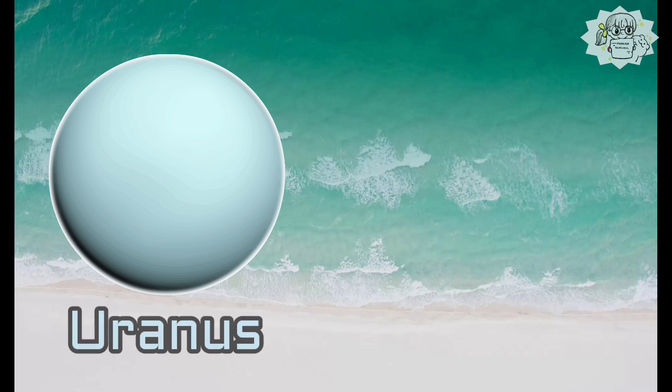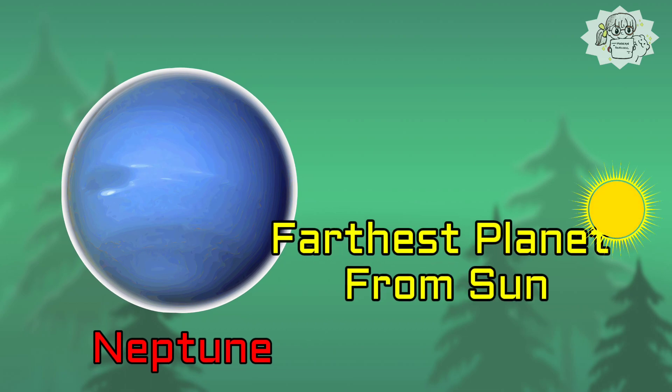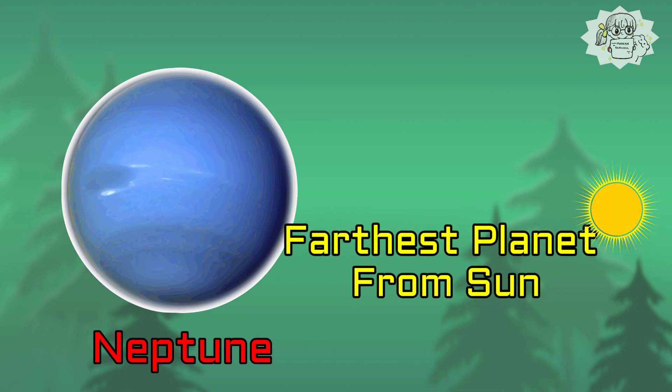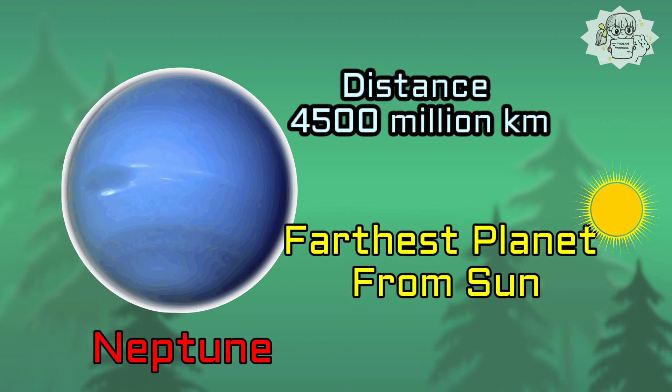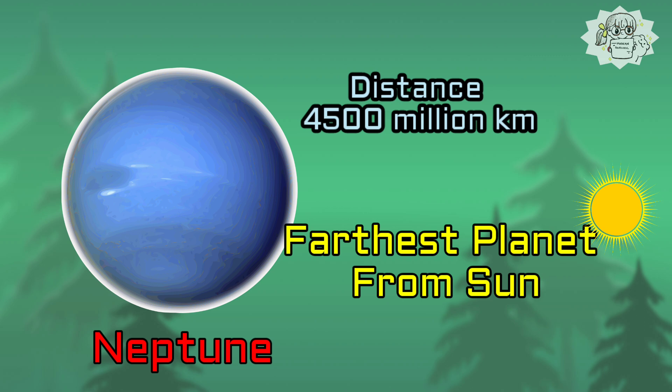Neptune is the furthest planet from the Sun at an average distance of about 4,500 million kilometers.